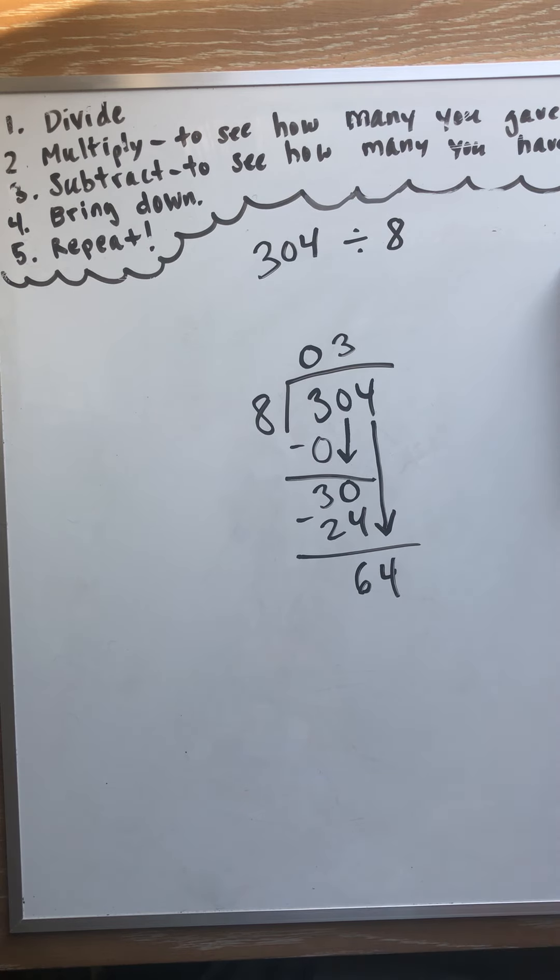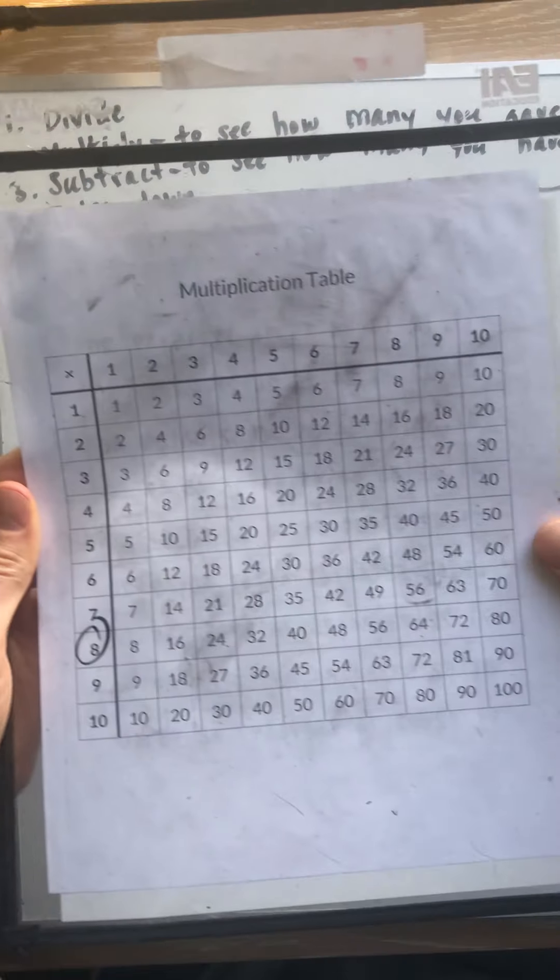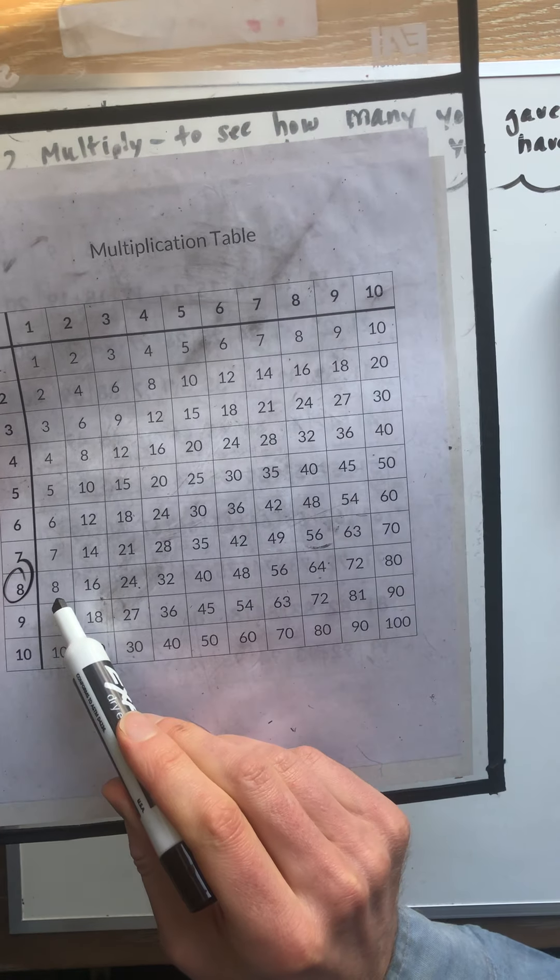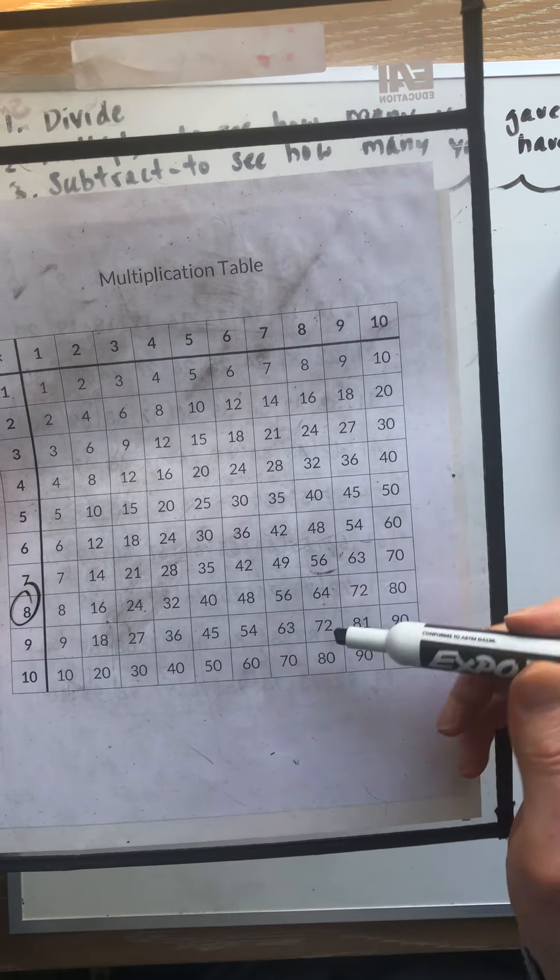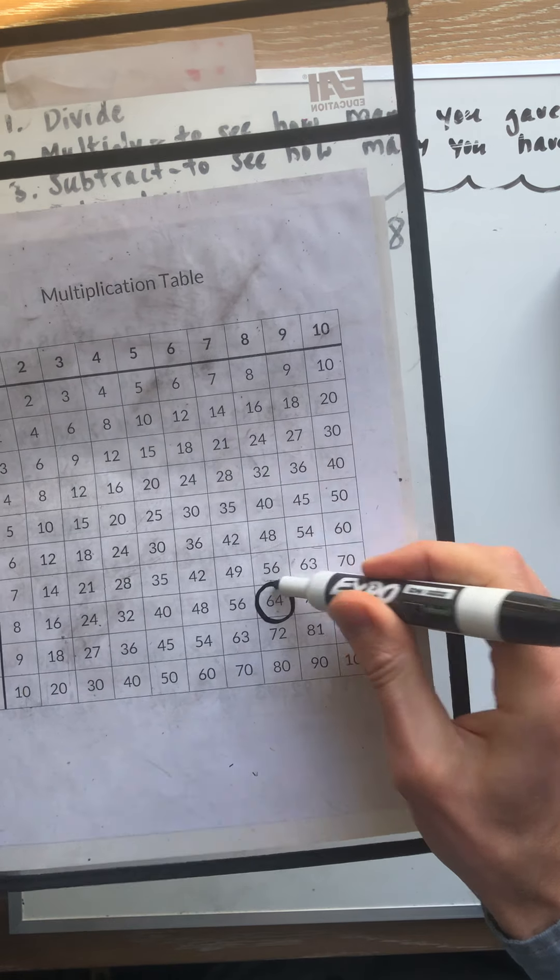So now we have 64 ones, because we had those 6 tens left over. So 64 ones, 8 times what equals 64? Or how many times does 8 go into 64? Let's find out. 8, 16... Oh, it's right there. I just found it. It fits in perfectly.